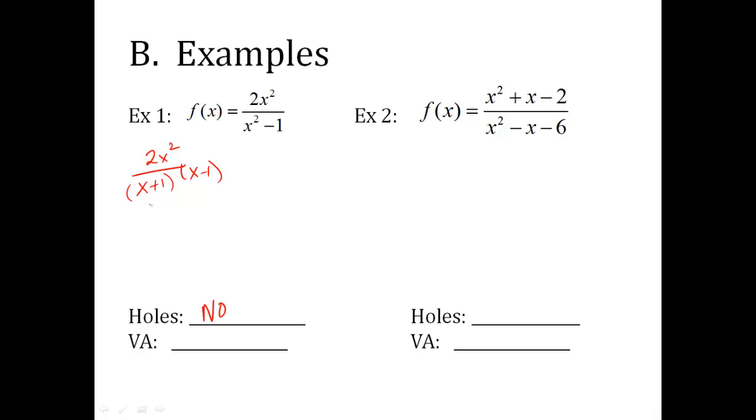Vertical asymptotes. I set whatever is in the denominator equal to zero and solve it for x. It's very much like domain. So x is negative one, x is positive one. So these are my vertical asymptotes. Yes, you can have more than one. That is common. So I'm done with example one. That's all I have to do.